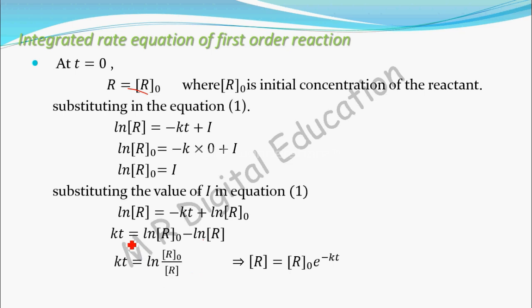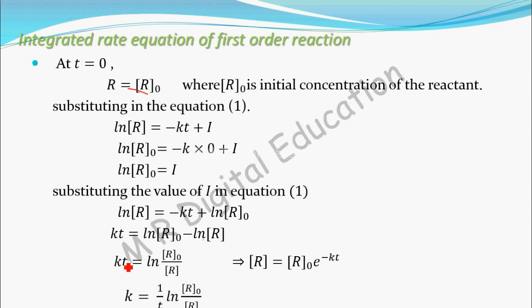So kt equals ln(R naught / R). You can also write this as R equals R naught times e to the power minus kt. Now, extracting the value of k: k equals 1 by t times ln R naught by R.